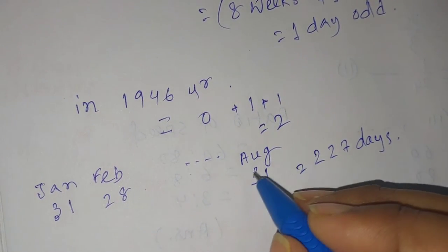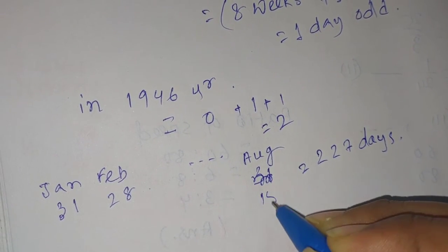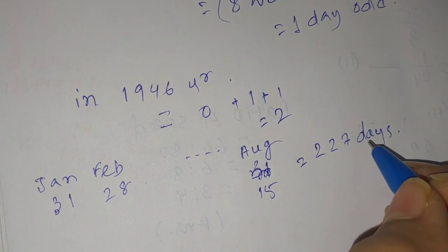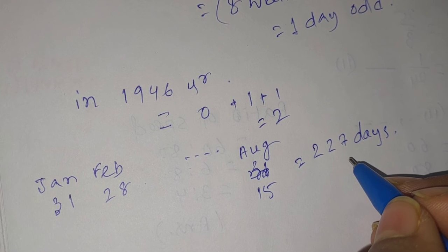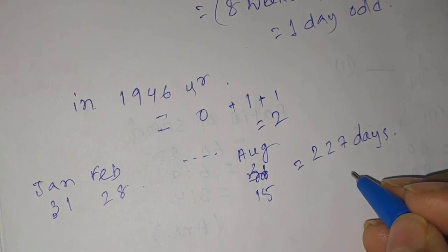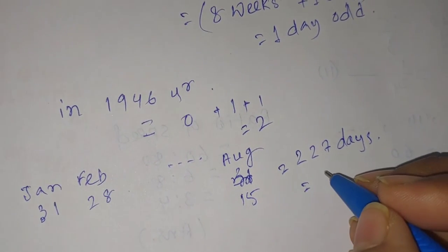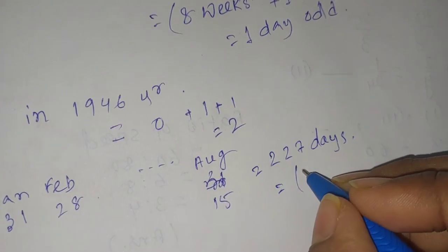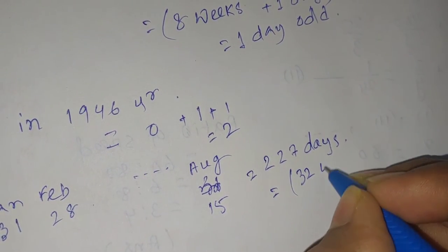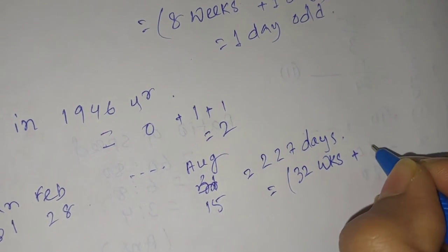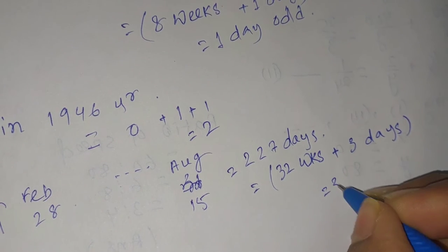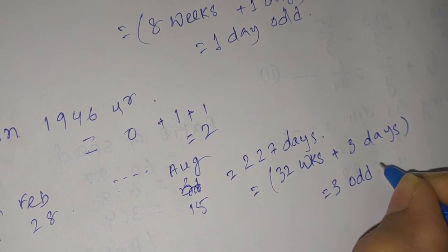I will take it till 15 because the question is 15th August, so it is 227 days. Now 227 days means how many weeks and how many days? 227 means 32 weeks, 32×8 days, plus 3 days. That means 3 odd days.